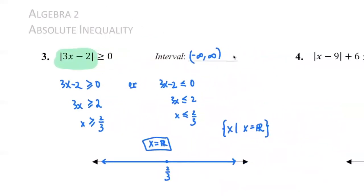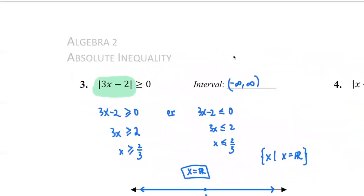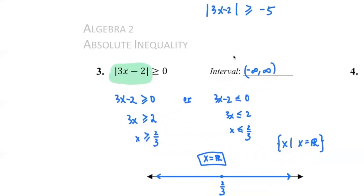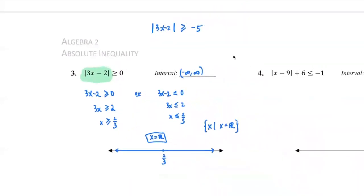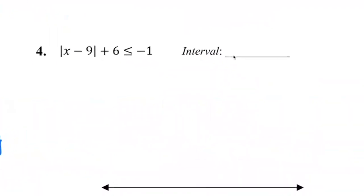I'm going to give you a couple more scenarios, just for reference. Like, if I change this to absolute value of 3x minus 2, greater than or equal to negative 5, for example, well, this would be all real numbers as well, because whatever you put in for x, it's going to be bigger than or equal to negative 5. Now, just make sure that you are actively interpreting what the inequality is saying, and then make sure you are using your logic to support your claim. So, that's for number 3. Now, what about number 4?